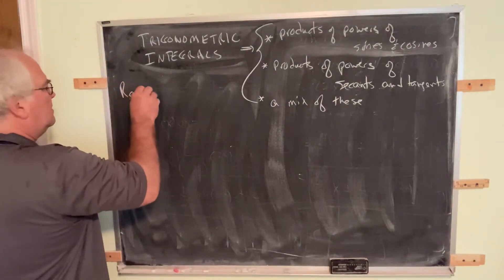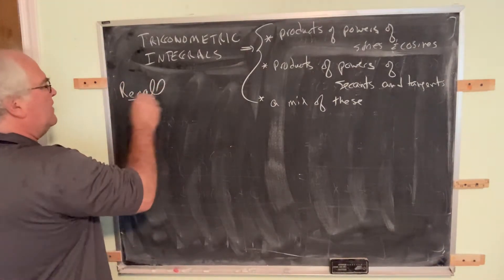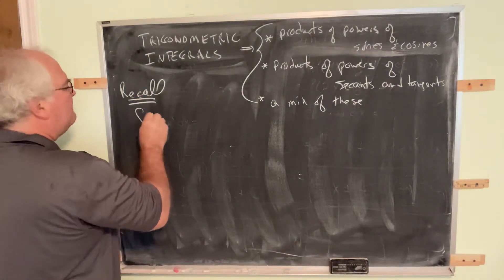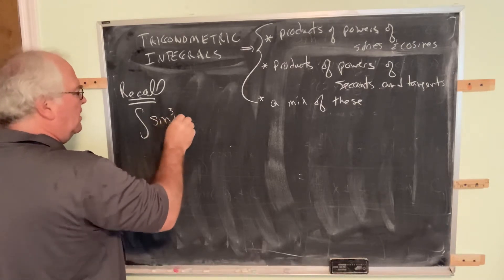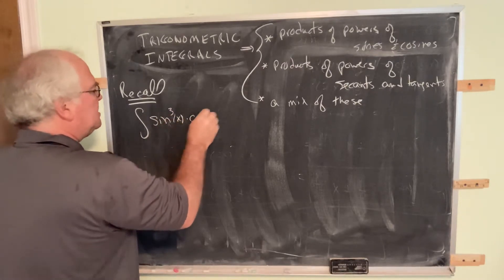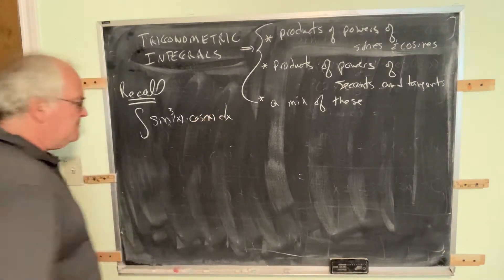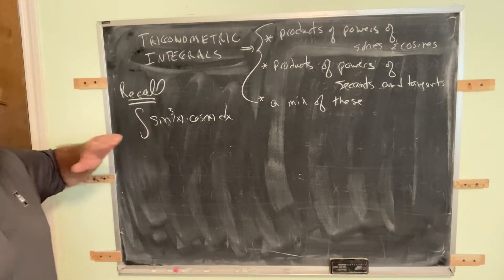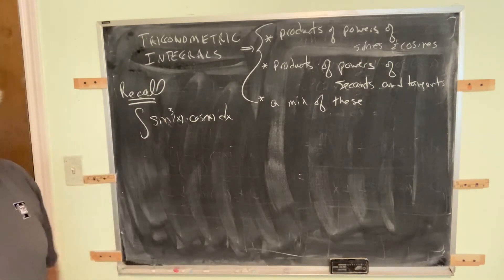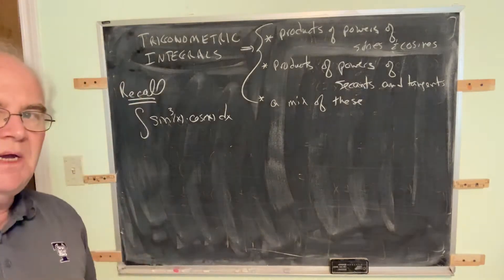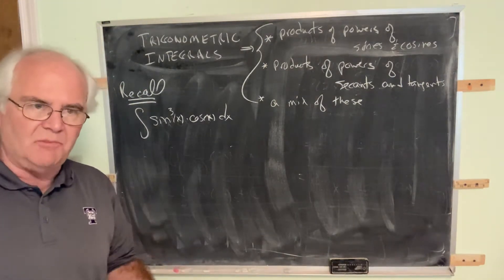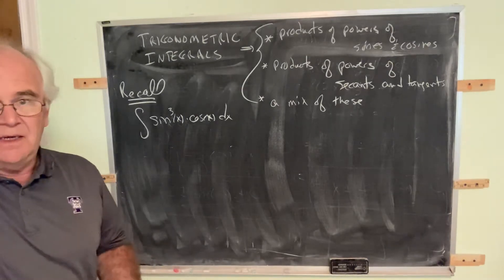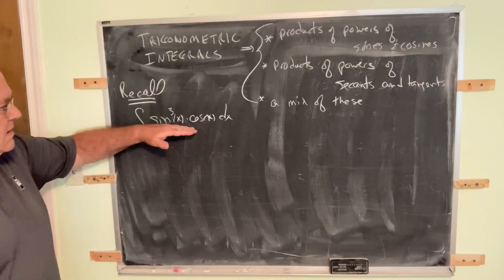I'm going to start with something you should already know. Suppose we have the integral of sine to the third of x times cosine of x dx. This is a Calculus 1 problem — an ordinary garden-variety Calculus 1 u-substitution. It's not a basic form, so the only tool in your Calculus 1 toolkit is u-substitution.